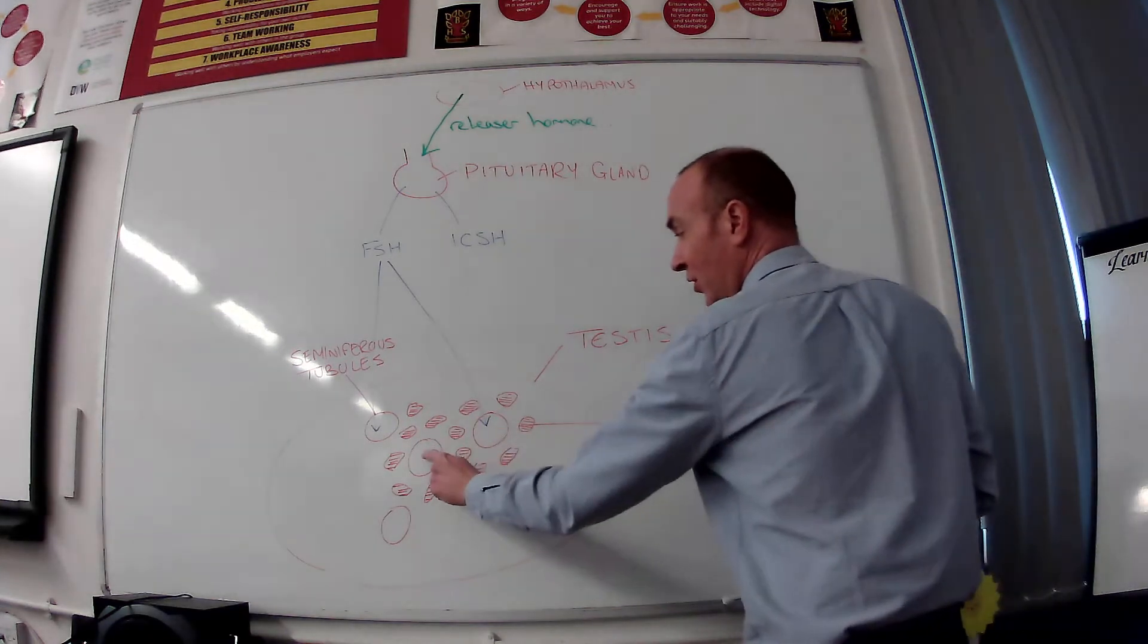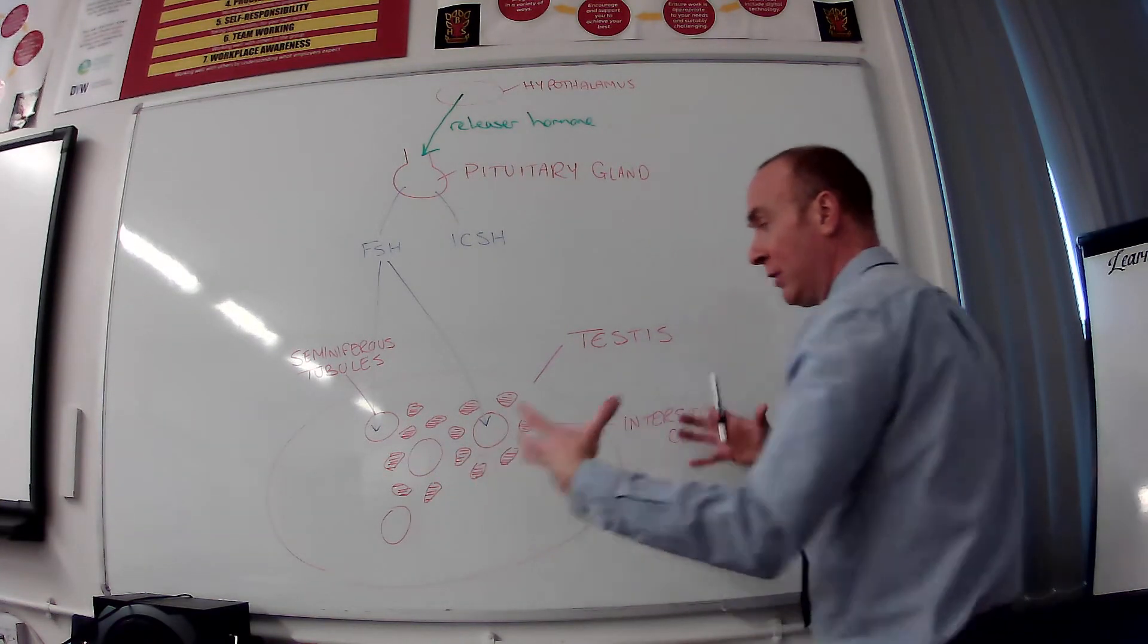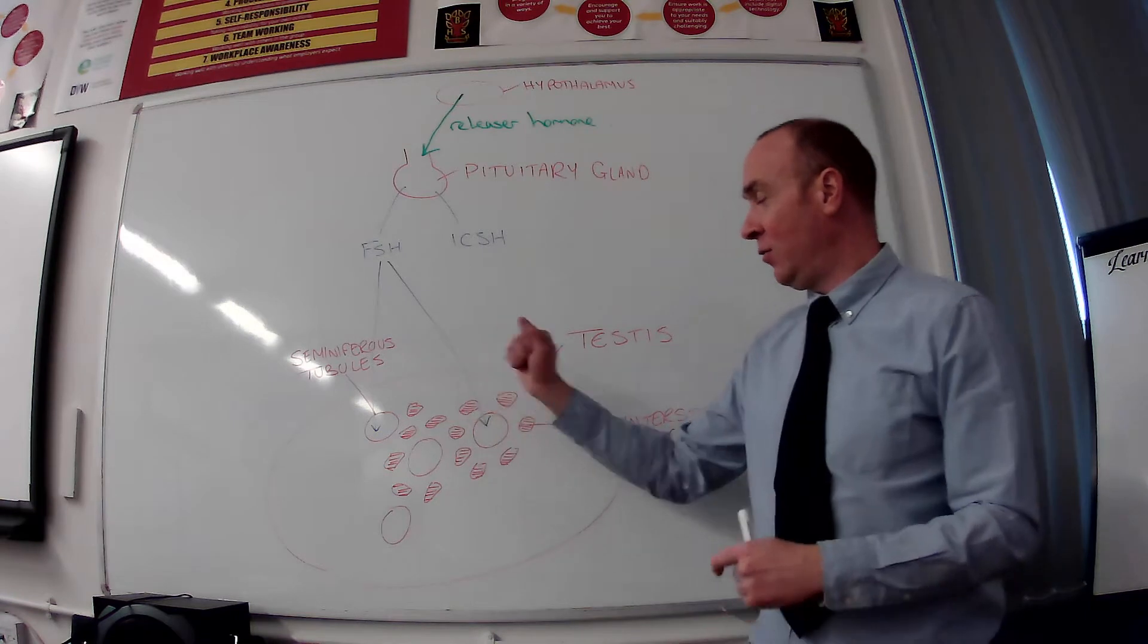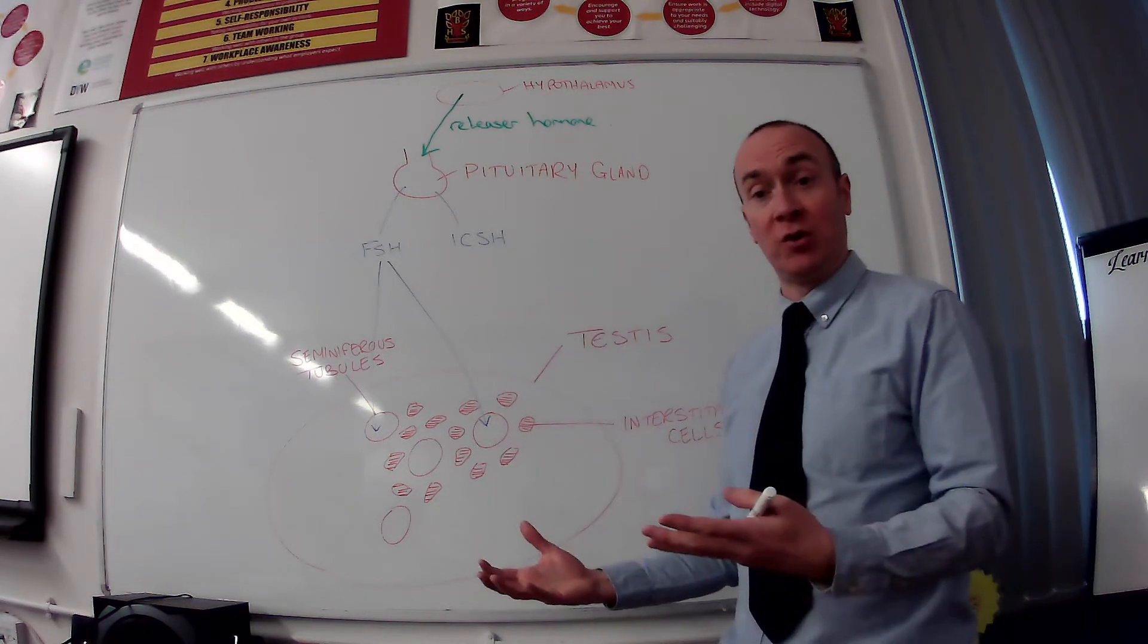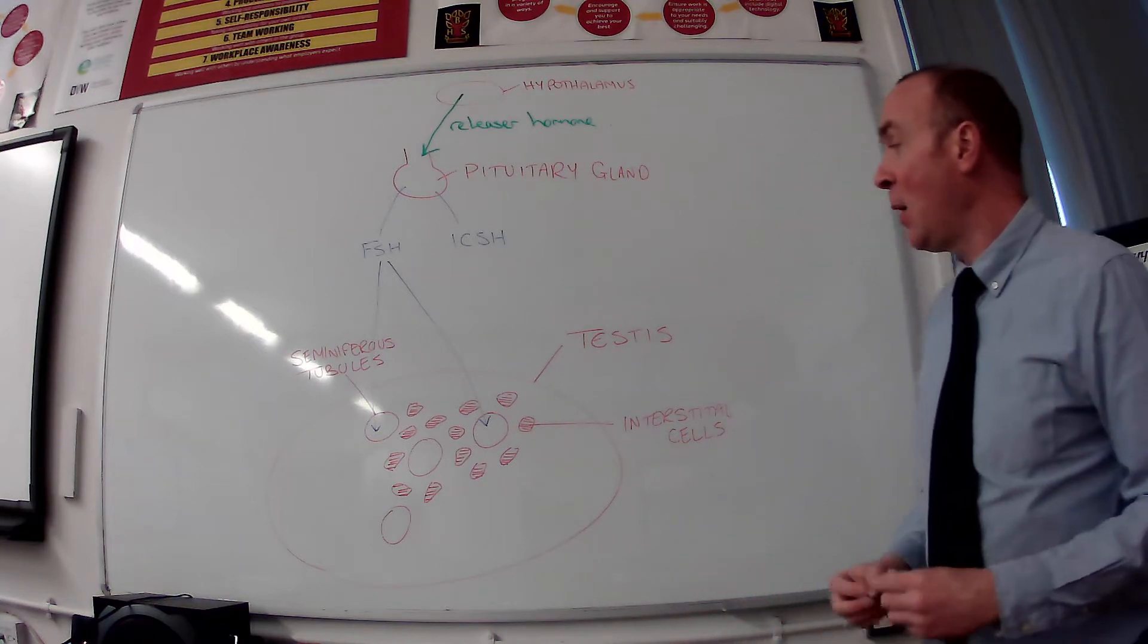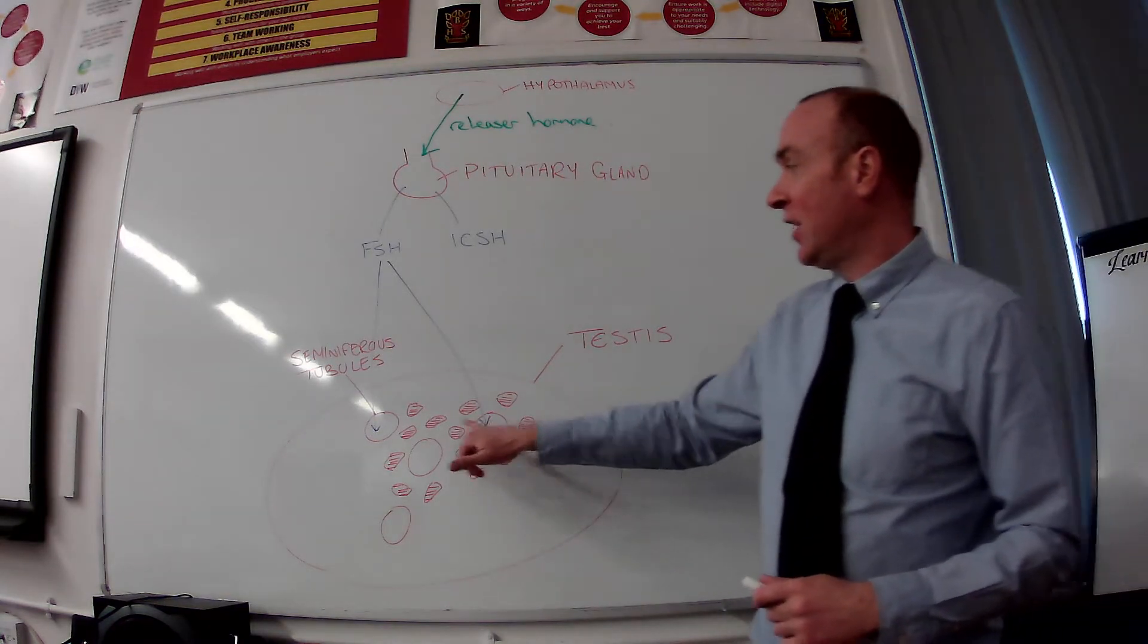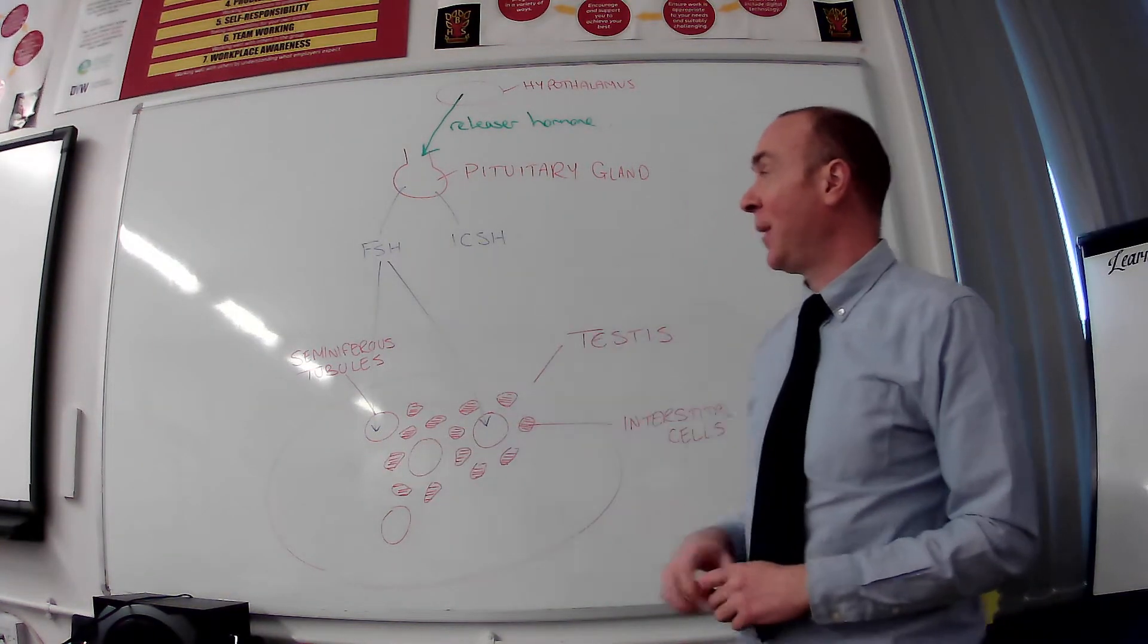So sperm is produced in these structures called seminiferous tubules. They all lead into the one tube which runs round to the penis and that's how sperm is released out into the female, but produced inside these seminiferous tubules as triggered by FSH.